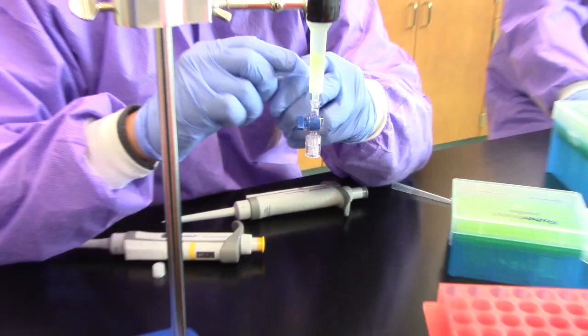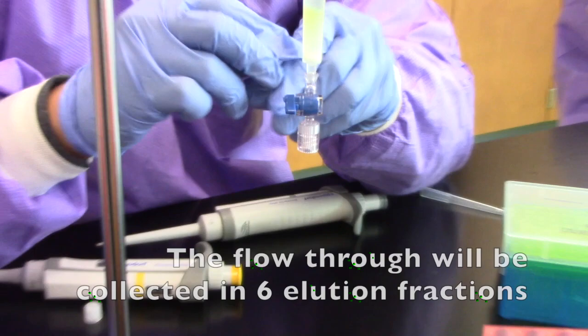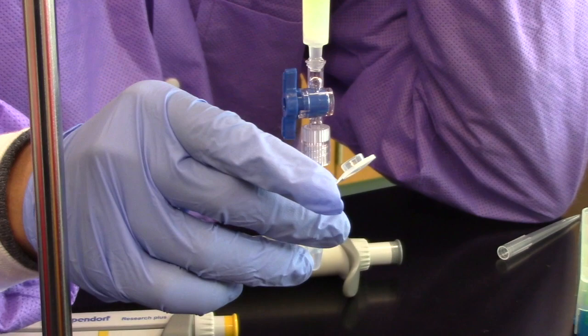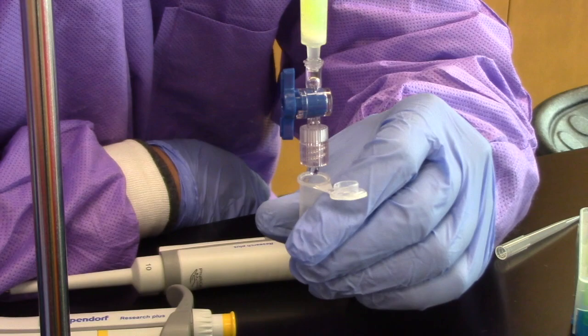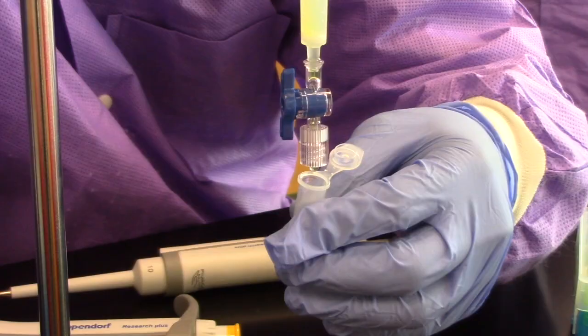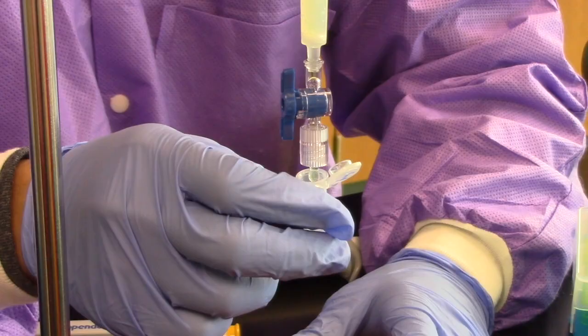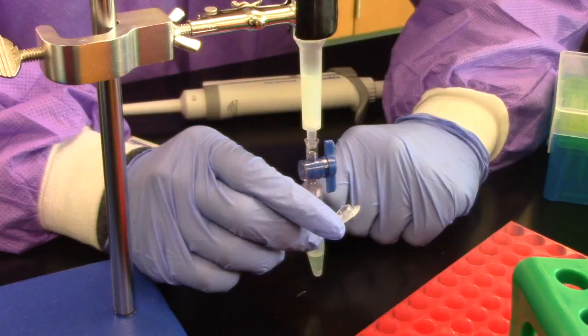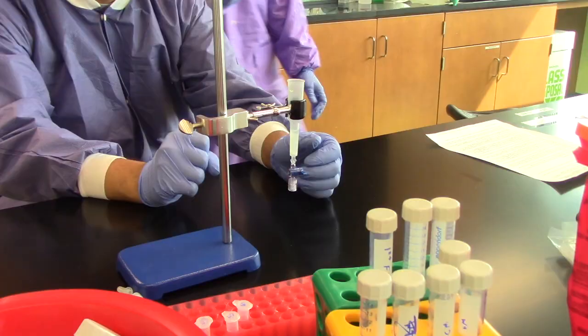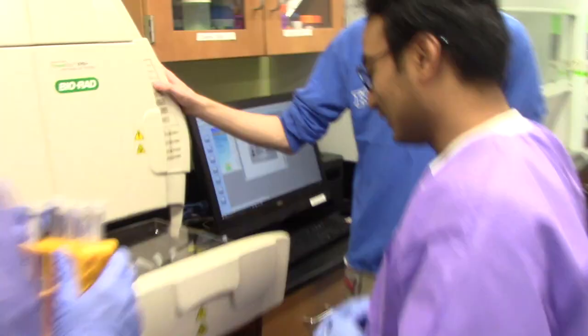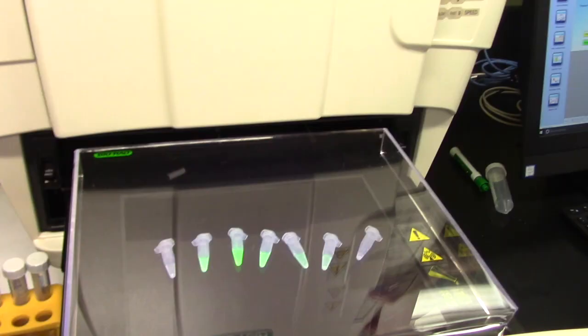The flow through will then be collected in 6 elution fractions. Store fractions for future use or fluorescence analysis. View under the UV transilluminator to see the different concentrations of Campari.